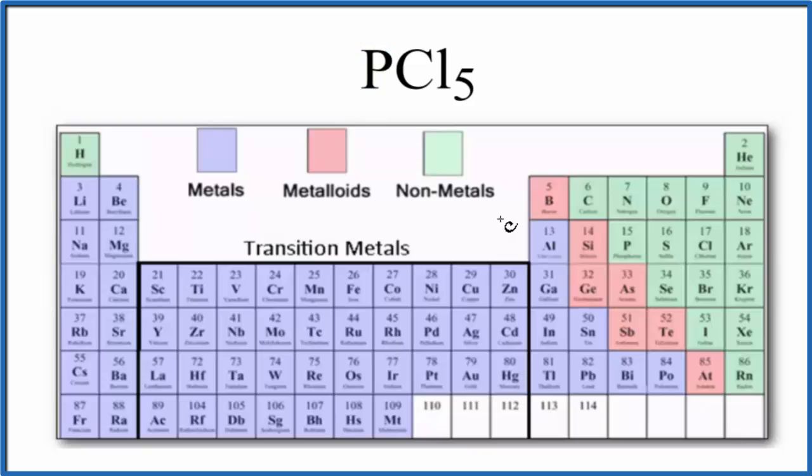If we look at the periodic table divided into metals, metalloids, and nonmetals, we'll see that phosphorus right here is a nonmetal. And then chlorine right over here, that's also a nonmetal.